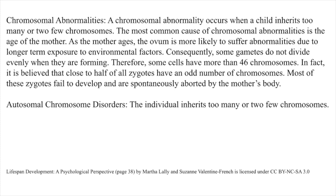Chromosomal Abnormalities. A chromosomal abnormality occurs when a child inherits too many or too few chromosomes. The most common cause of chromosomal abnormalities is the age of the mother. As the mother ages, the ovum is more likely to suffer abnormalities due to longer-term exposure to environmental factors. Consequently, some gametes do not divide evenly when they are forming, so some cells have more than 46 chromosomes. It is believed that close to half of all zygotes have an odd number of chromosomes. Most of these zygotes fail to develop and are spontaneously aborted by the mother's body.